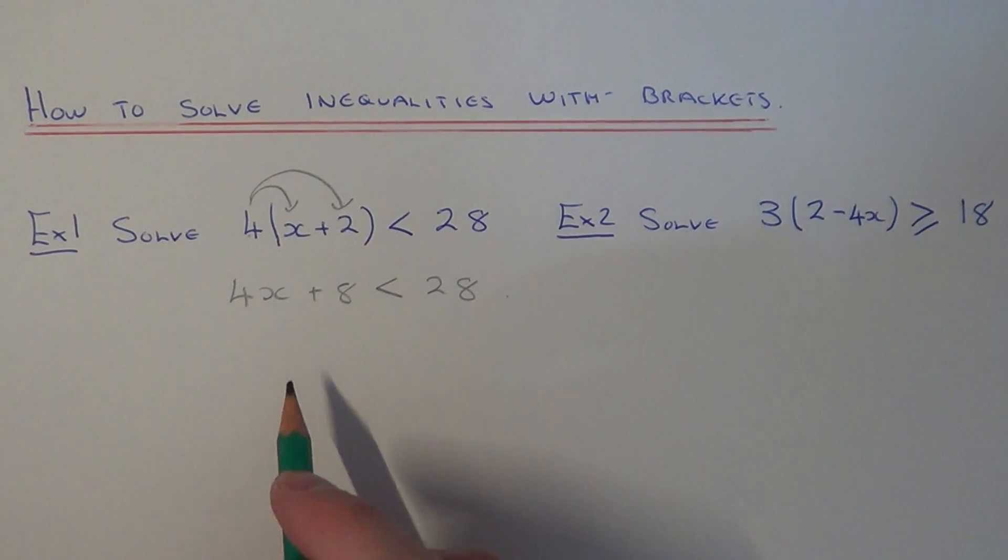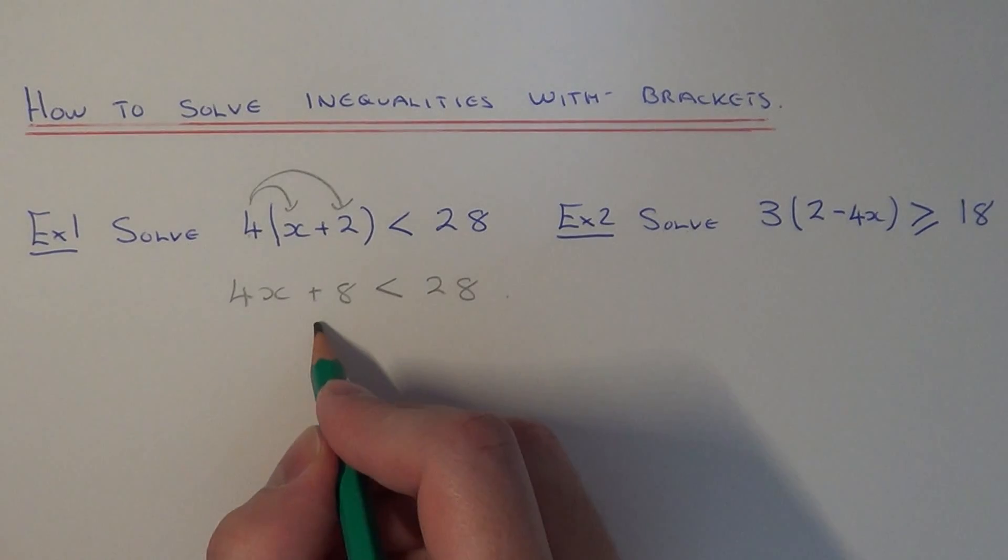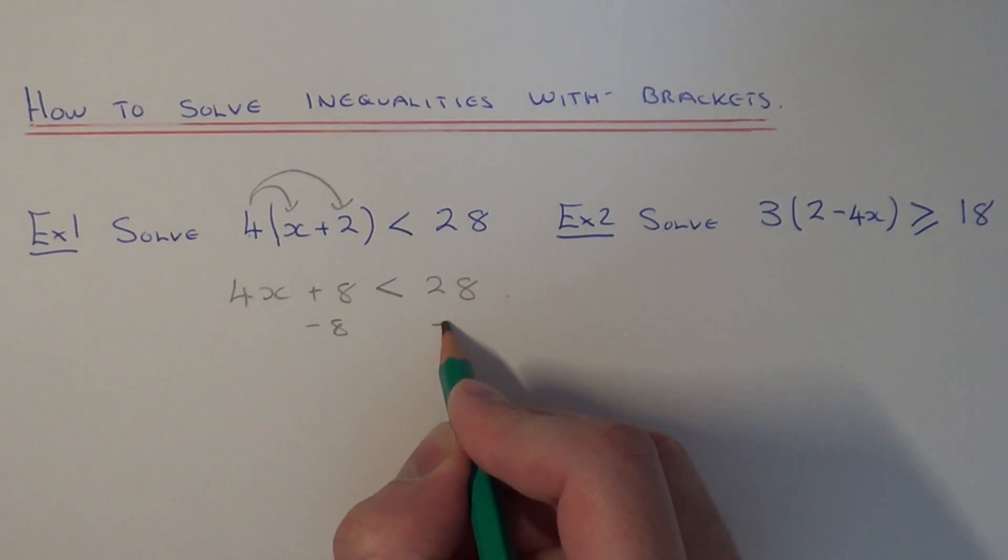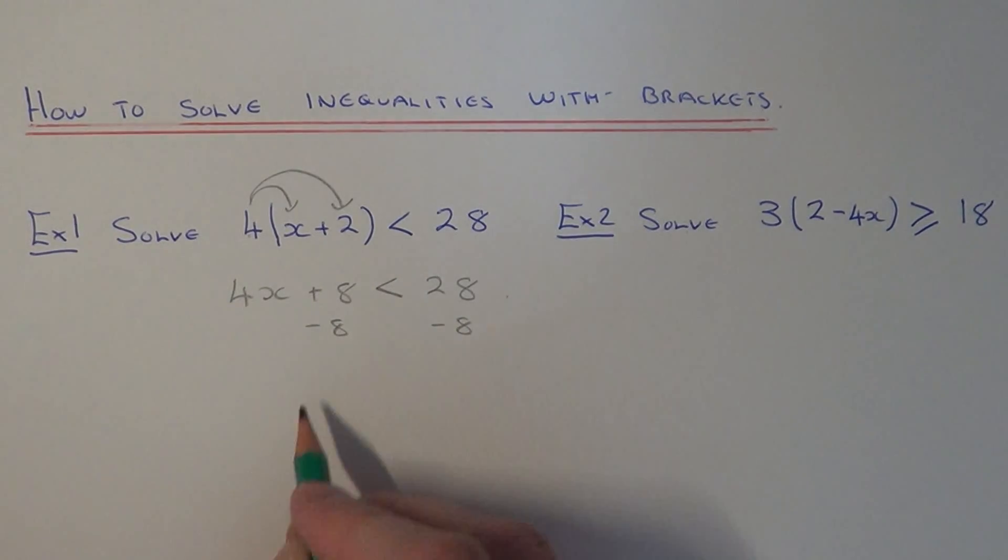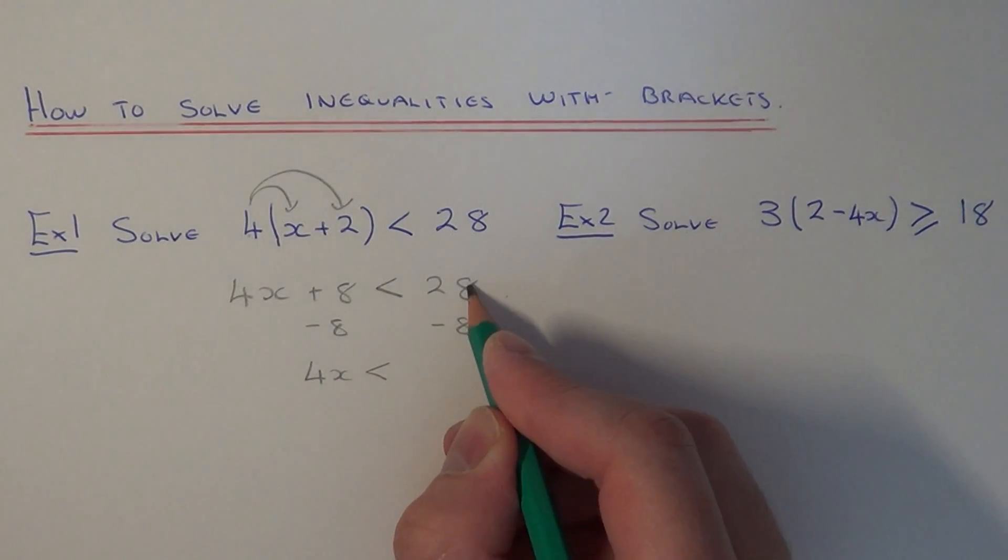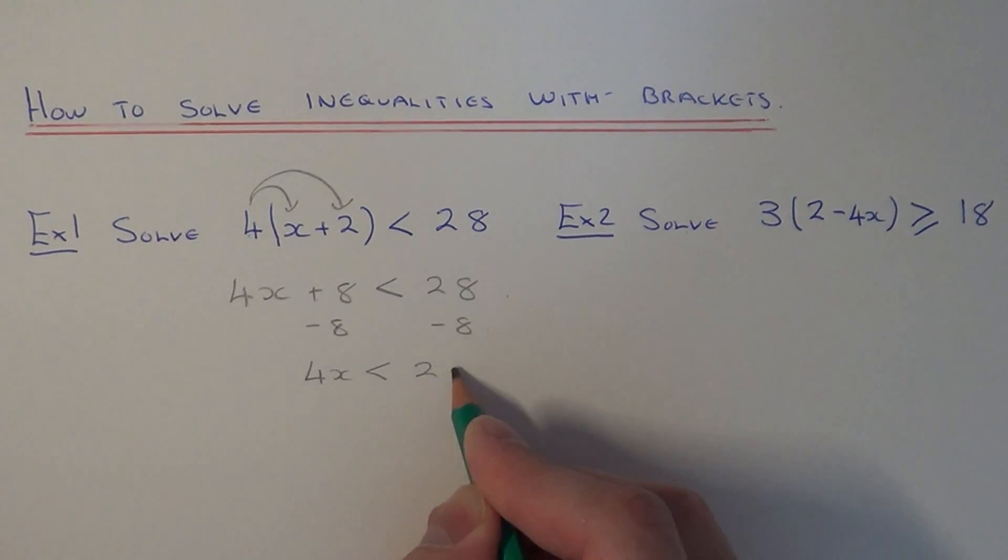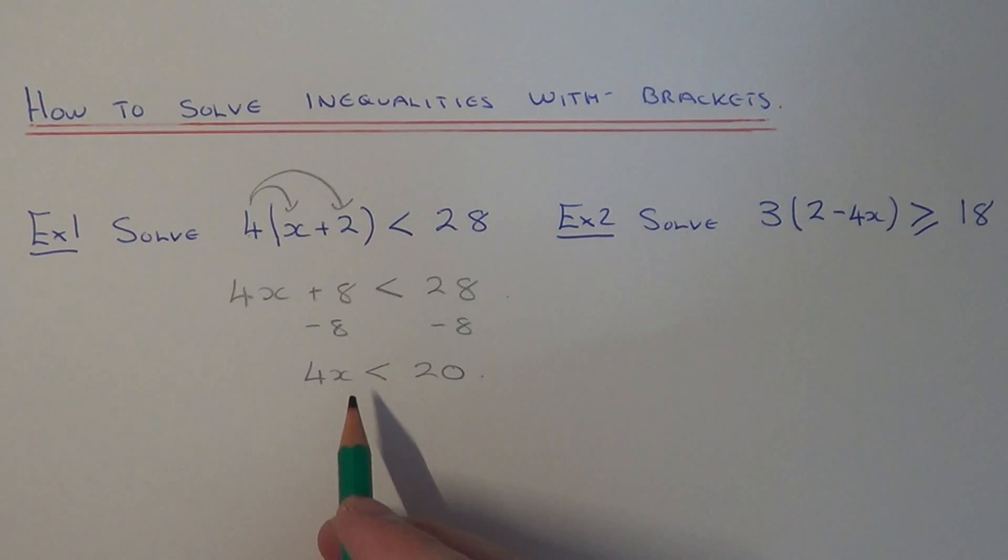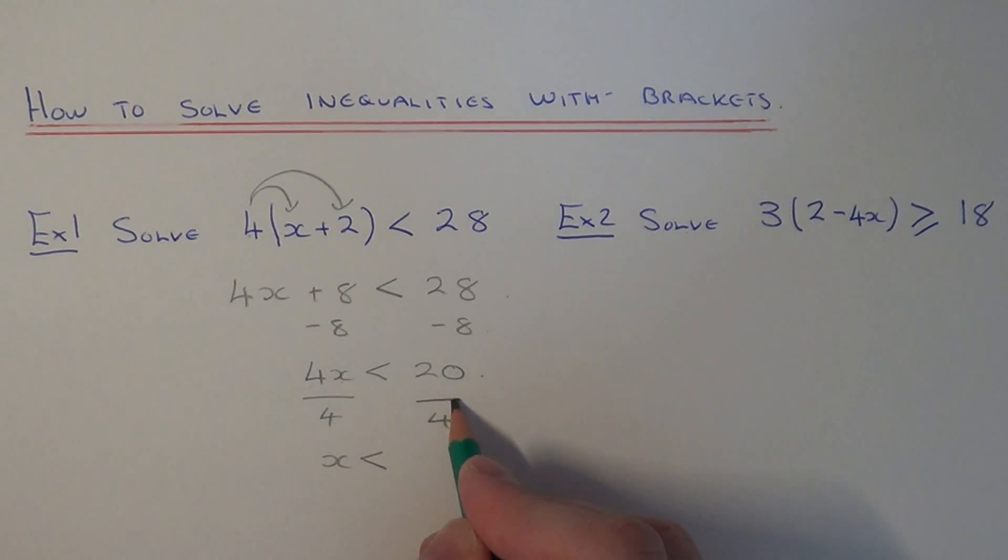So we just need to now do the opposites in reverse order. We need to get rid of the plus 8 first of all by subtracting 8 from both sides. So this will give us 4x is less than 28 take away 8 is 20. And then we just need to get rid of the 4. It's been multiplied by 4 so the opposite is to divide both sides by 4. So this will give x is less than 20 divided by 4 is 5.